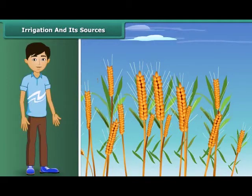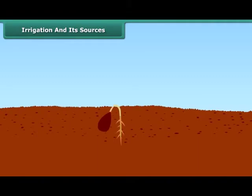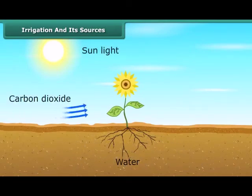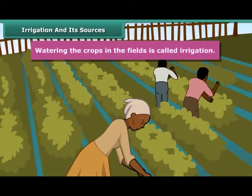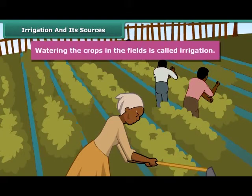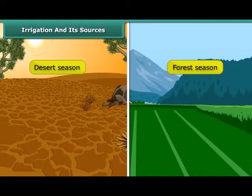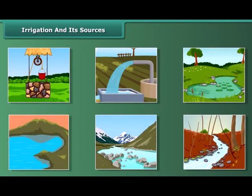Friends, as we all know, water is very essential for all living beings, but what is its role in the production of crops? Water is essential for crops because germination of seeds cannot take place under dry conditions. Water is absorbed by plant roots, and along with it, minerals and fertilizers are also absorbed. Hence, watering the crops in the fields is called irrigation. The time and frequency of irrigation varies from soil to soil, crop to crop, and season to season. The main sources of irrigation are wells, tube wells, ponds, lakes, rivers, dams and canals.